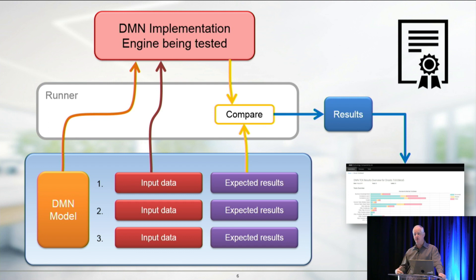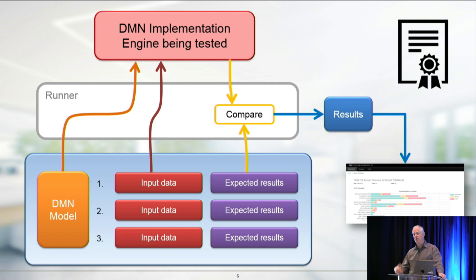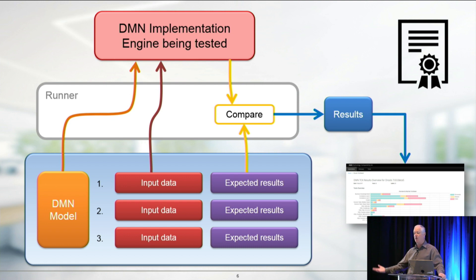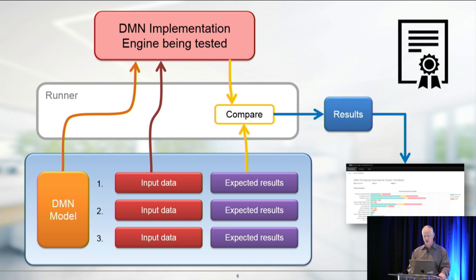When Actico joined the group, they found out about us, said they want to be part of this. About two weeks later they had all the tests running, and they were able to supply back to us hundreds more tests. I had the same experience at Fujitsu - we used the Drools engine and put DMN into the product. I asked one of my guys to set up and run the tests. He wrote a runner in about one day, and by the end of the week we had all the results and were able to show that we're compliant. So it's not difficult to show compliance as long as your DMN engine is running correctly.